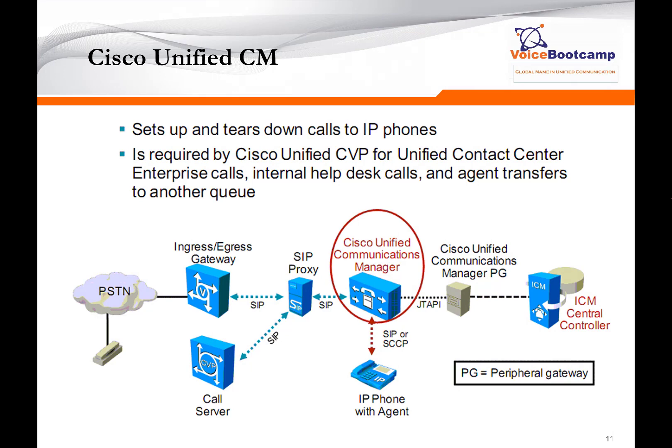Call manager, or Cisco Unified CM, is your PBX. It sets up and tears down calls to IP phones as required by Cisco Unified CVP for contact center enterprise calls. You would use call manager for your agents — this is where all your agents are registered. Sometimes calls are sent to CVP or directly to ICM, which will then send a call to CVP. Call manager plays a vital role because that's where all your agents are connected, and that's probably where the call will be coming in from or finally destined for. You can also use a third-party PBX if you want to.